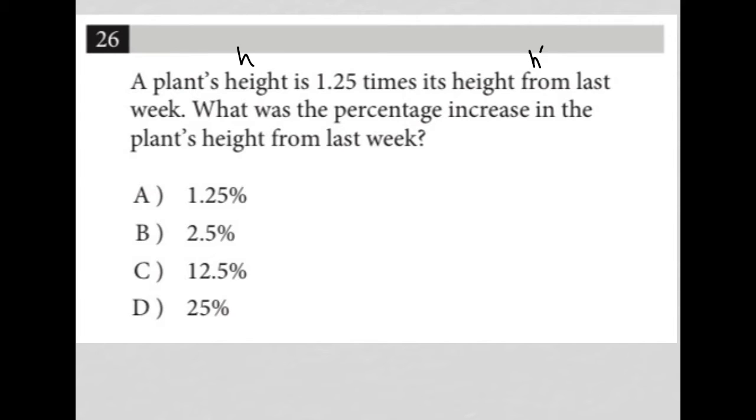So how do I translate this? A plant's height, h, is—equals—1.25 times, so 1.25 times height from last week, which I'm calling h prime.